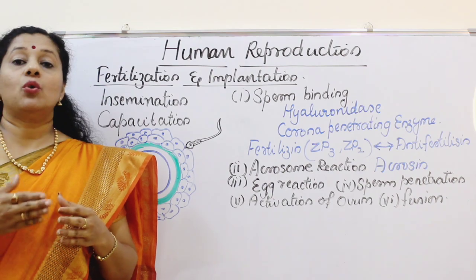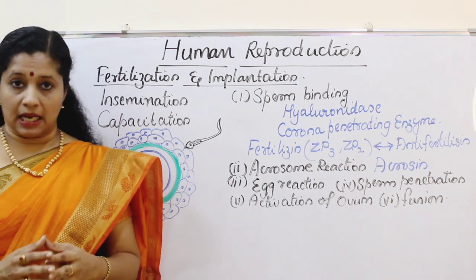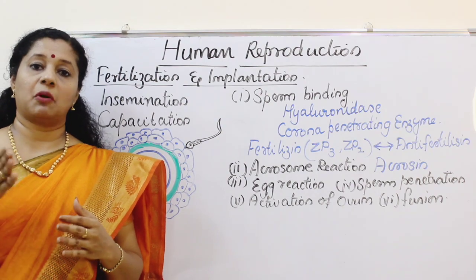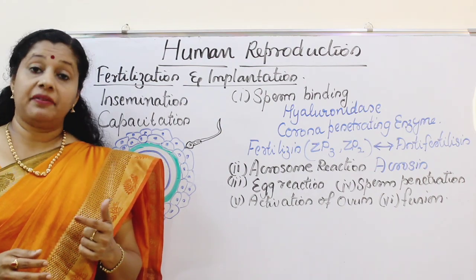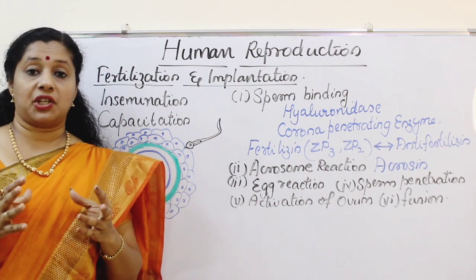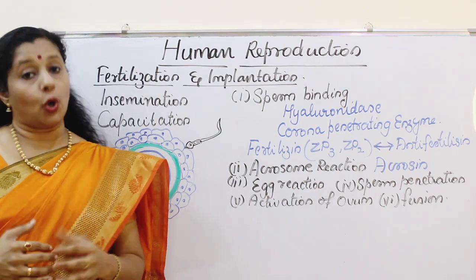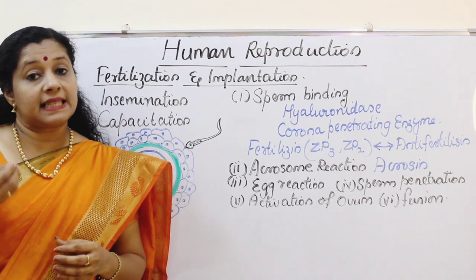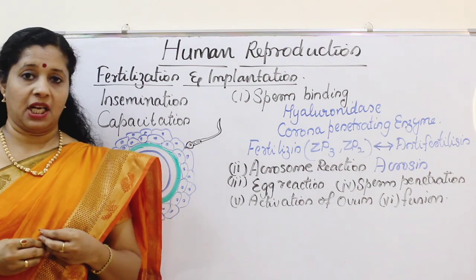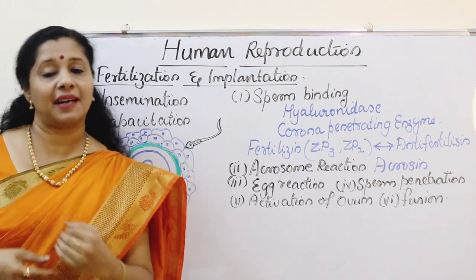The sperm will now go through the uterus and reach the ovum. Different factors help it: first, the swimming movement of the sperm itself propels it toward the ovum. Apart from that, the uterus also shows mild contraction. The fallopian tube and uterine wall contract mildly when the female secretes oxytocin during coitus, and the viscous secretions of the female reproductive tract also help it reach the ovum.